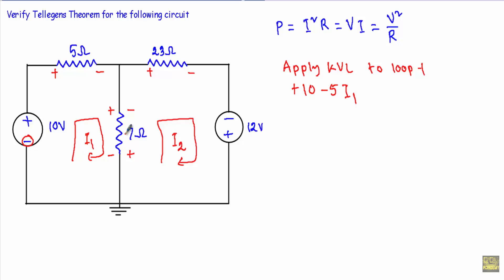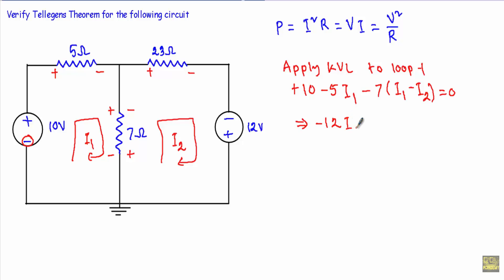From this terminal to this terminal I encounter the 7 ohm resistor with its positive terminal first, so its voltage is minus 7(I1 − I2). Since I1 and I2 flow in opposite directions I assume I1 is greater than I2. Simplifying this equation gives: −12I1 + 7I2 = −10. This is equation number 1.